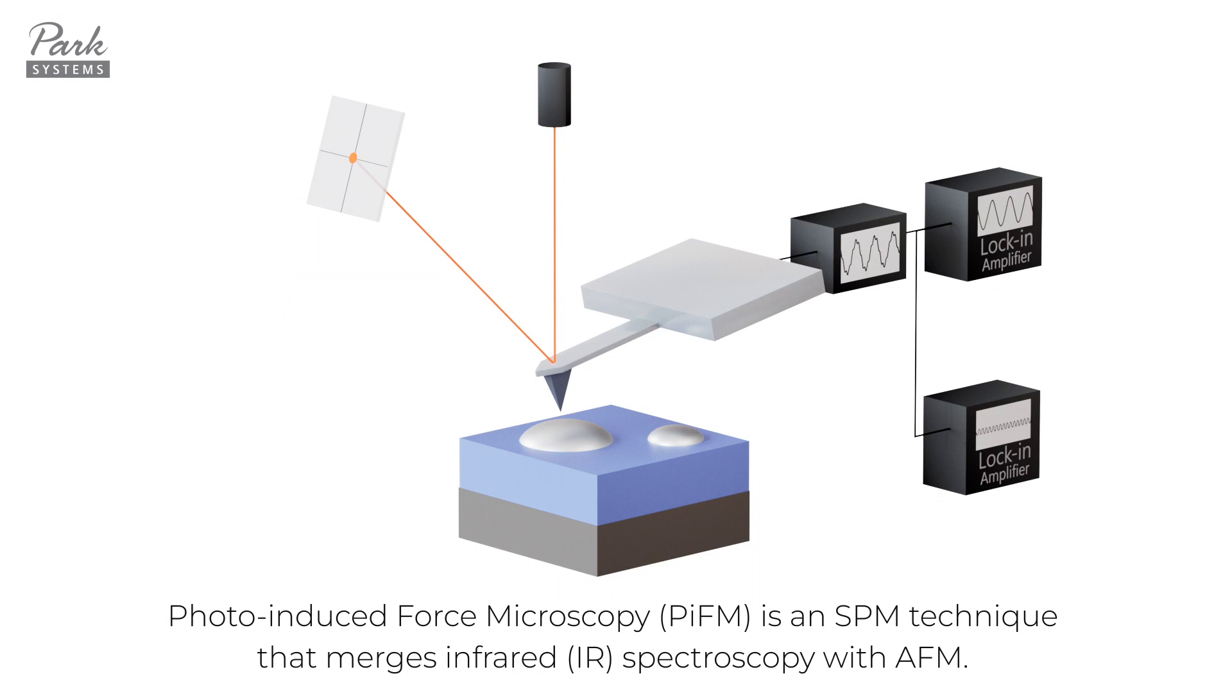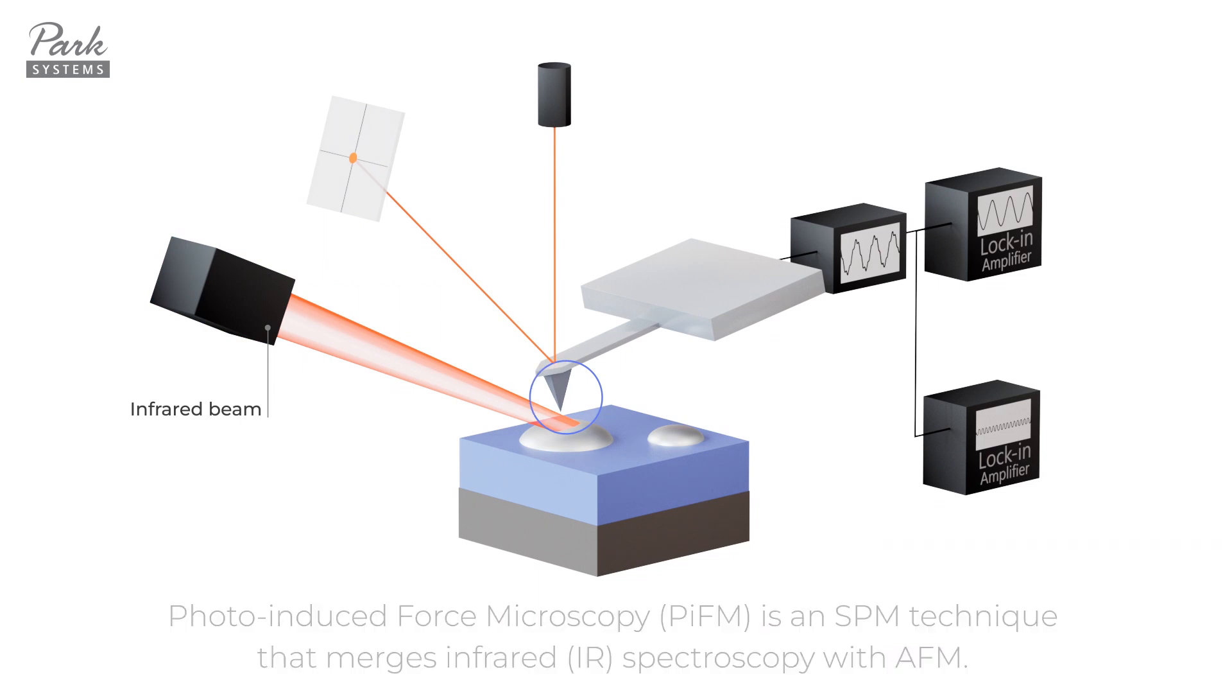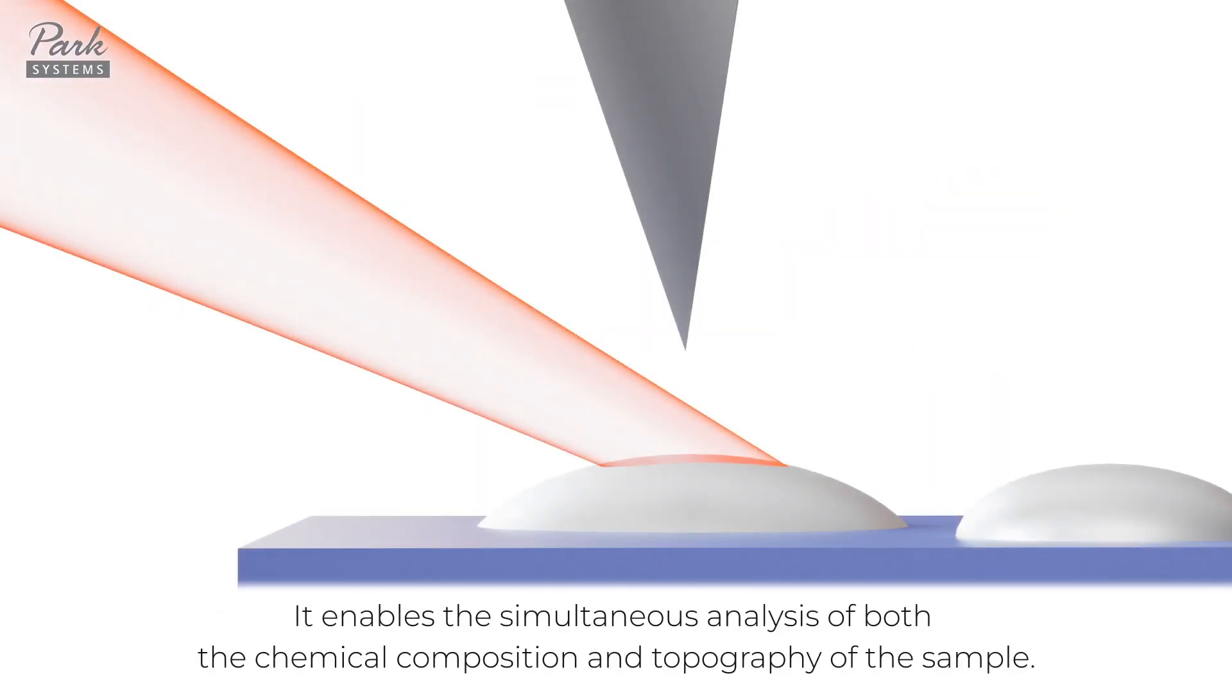Photo-induced force microscopy is an SPM technique that merges infrared spectroscopy with AFM. It enables the simultaneous analysis of both the chemical composition and topography of the sample.